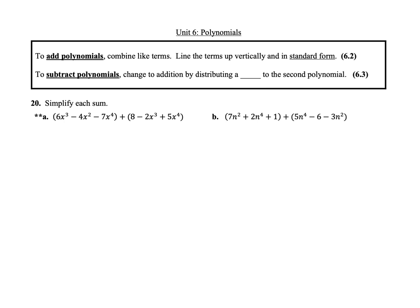When you add polynomials, you want to combine like terms. Like terms are terms that have the same variable and the same exponent. You'll line the terms up vertically and in standard form to help you do this. Standard form is a form of a polynomial where you write the terms in order from the biggest to the smallest exponent. When we subtract polynomials, we'll change them to addition by distributing a negative one to the second polynomial.